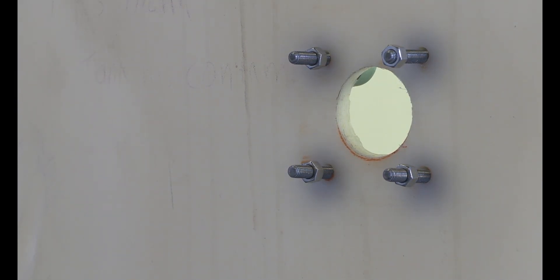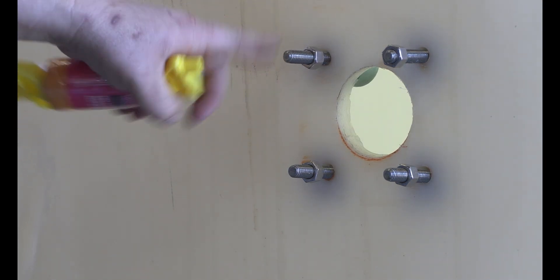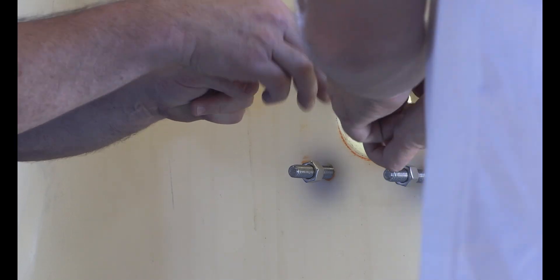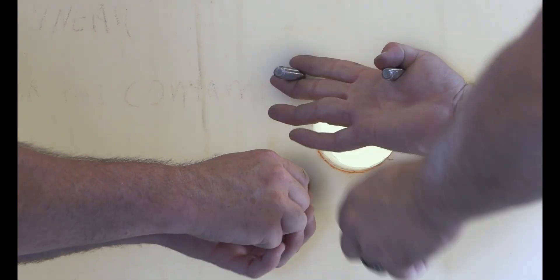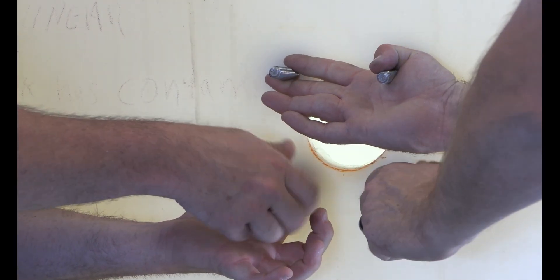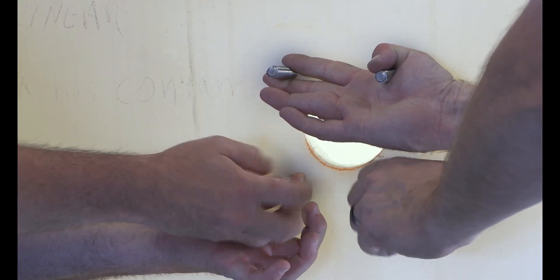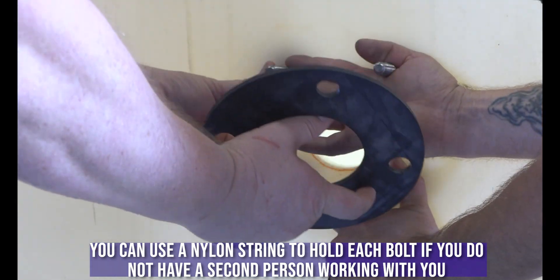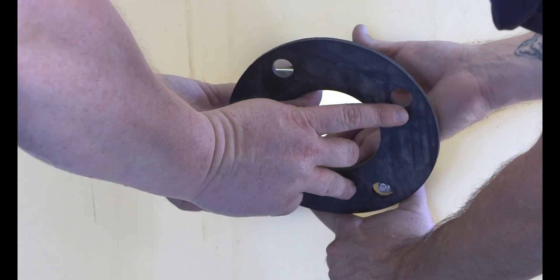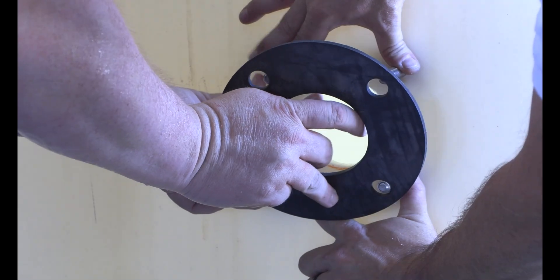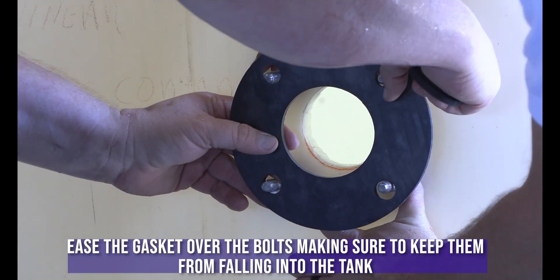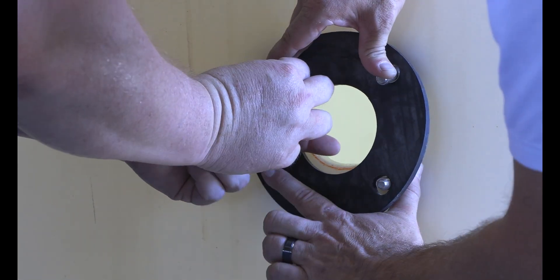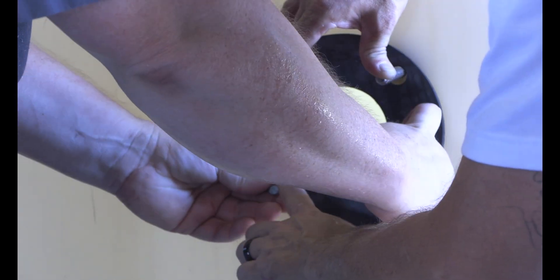Once you've done that, now all your bolts are in. You can have two people, so you can pull the nuts, hold the studs, and we're going to put the gasket on after the fact. Normally, if it's just me by myself, I'll actually use nylon string to go around each bolt. Don't push on the bolts, just ease it over the bolt holes. Line it up and take your time.